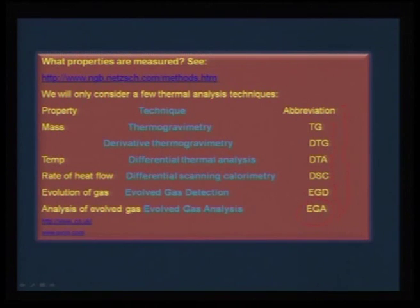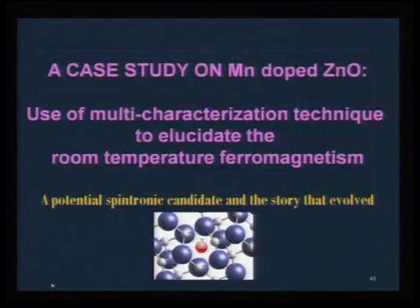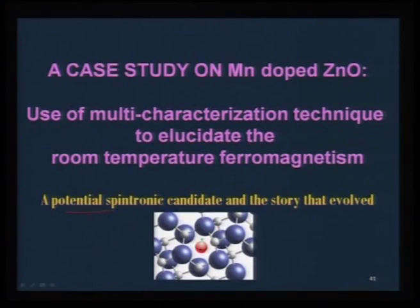All these techniques will be discussed in module 3. I would also like to take case studies where we use multiple characterization techniques — drawing information from several techniques to elucidate a particular mechanism beyond doubt. For example, manganese-doped zinc oxide, a potential spintronic candidate, has created lot of curiosity about the origin of its magnetism. We will take this as a case study using several techniques to carefully interpret the magnetic origin.